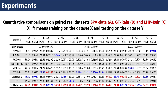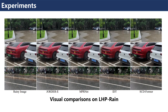Here are quantitative comparisons on the paired real datasets: SPA data for A, GT-Rain for B, and LHP-Rain for C. Note that X to Y means training on dataset X and testing on dataset Y. Visual comparisons on LHP-Rain support the strong representation of SC-deformer.